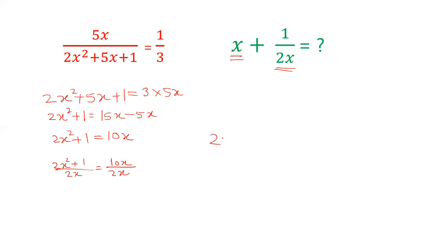The first term becomes 2x square by 2x, second term becomes 1 by 2x, and the right side becomes 5. Now the 2 cancels out - x square divided by x is x - so x plus 1 by 2x equals 5.